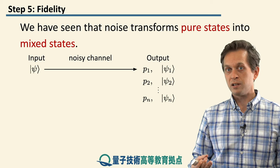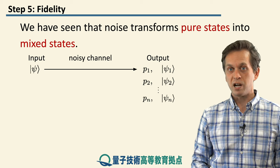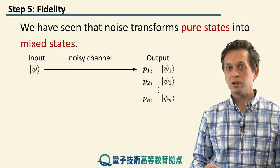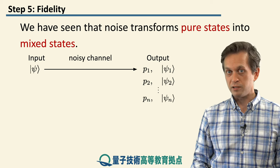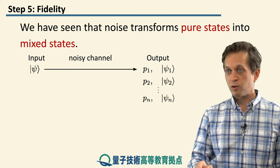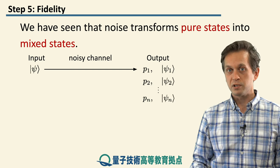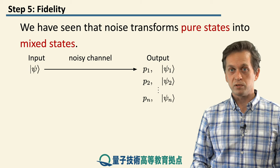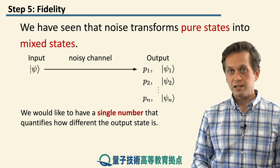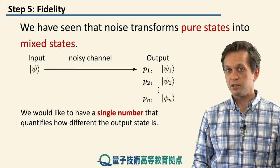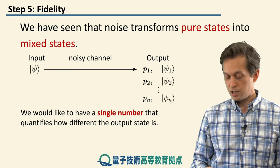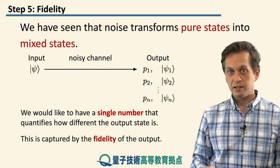And often we are interested in a very succinct way of describing this output, or describing the quality of the output state. Naturally, talking about all of these probabilities and all of these possible pure states in this distribution is very clumsy and not very useful. So what we are looking for is a single number that would describe the quality of our state at the output.